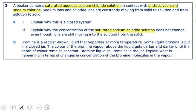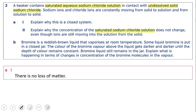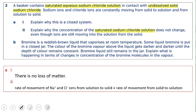Question 2: A beaker contains saturated aqueous sodium chloride in contact with undissolved solid NaCl. Sodium and chloride ions are constantly moving between solid and solution, establishing equilibrium. Part (a): This is a closed system because there is no gas and there is no loss of matter. We write: there is no loss of matter, so it is a closed system.